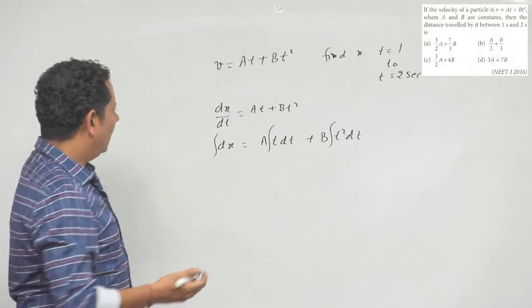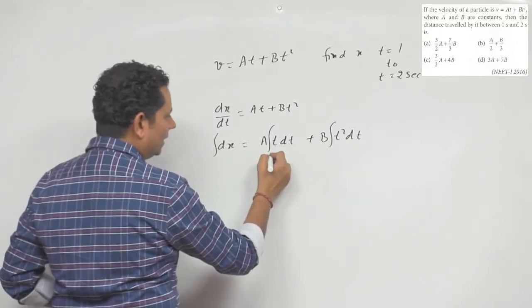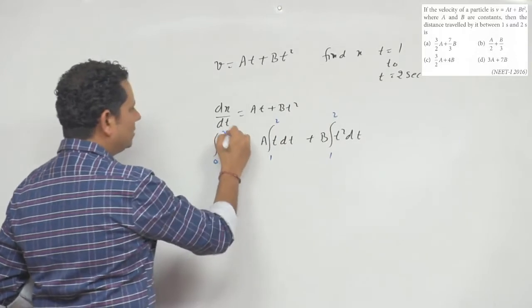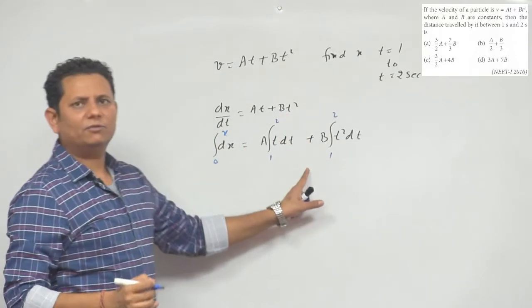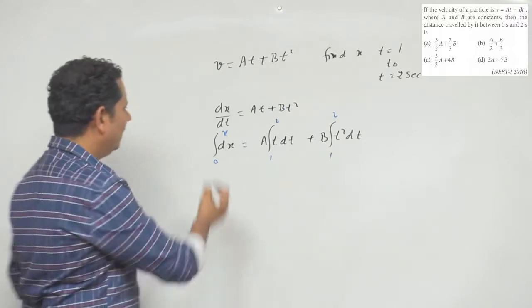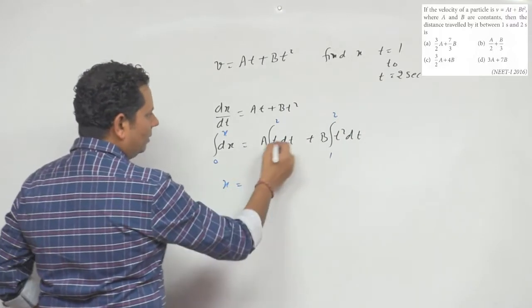You can do this by definite integration or indefinite integration. If you do definite integration, the time value will be from 1 to 2, and the left side will be 0 to x. If you do indefinite, you'll get plus C initially, then the value will come. So x will be equal to...